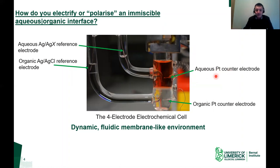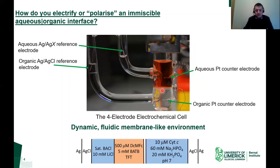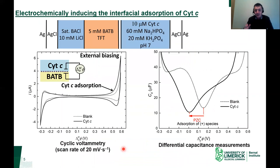It's a four-electrode cell. We have a platinum counter-electrode in the aqueous phase and a platinum counter-electrode in the organic phase — these carry current into our system. We also have two reference electrodes, one in the aqueous phase and one in the organic phase, which monitor the potential at our liquid-liquid interface. The aqueous phase contains 10 micromolar cytochrome C in PBS buffer, while the organic phase contains trifluorotoluene as solvent with the BATB organic electrolyte and 500 micromolar decamethylferrocene as sacrificial oxidant.